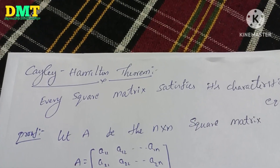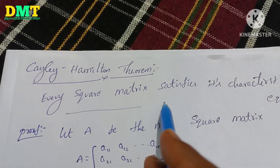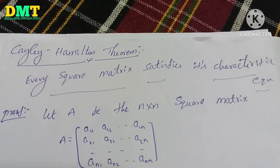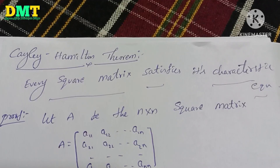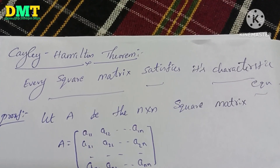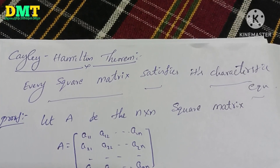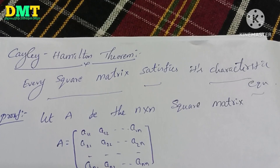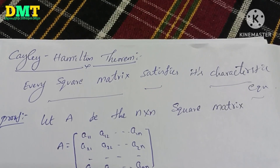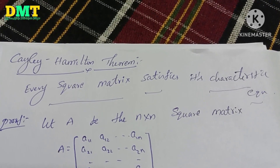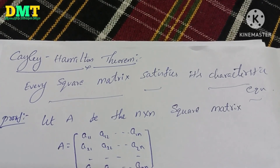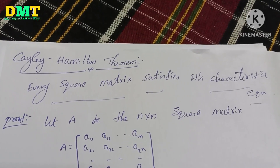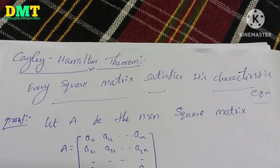This statement is: every square matrix satisfies its characteristic equation. If you have a square matrix, it satisfies the characteristic equation. This theorem is a statement, and if you have a statement, you can prove it. Let's prove it.